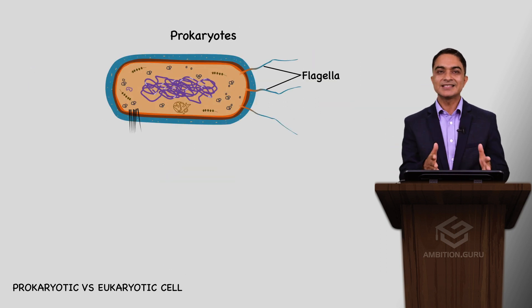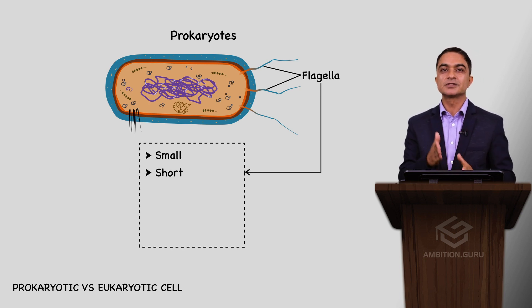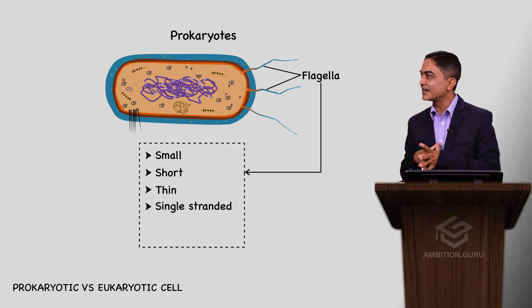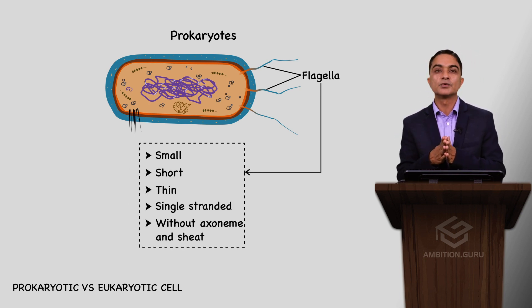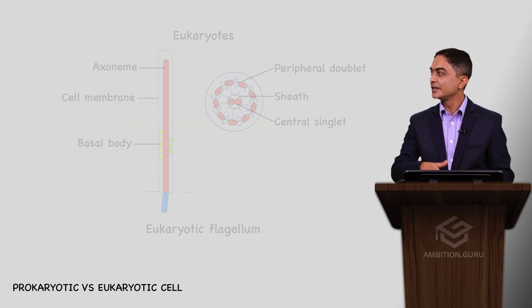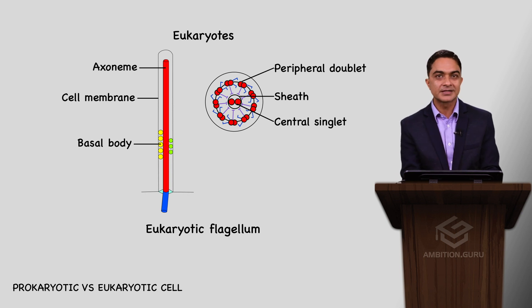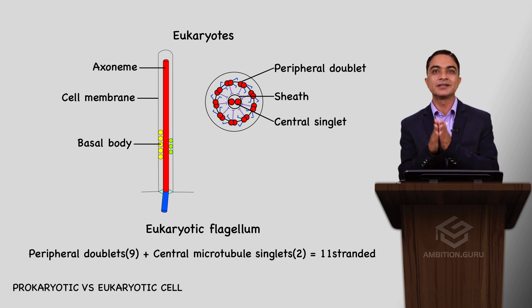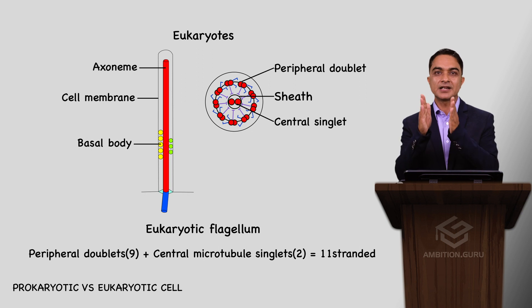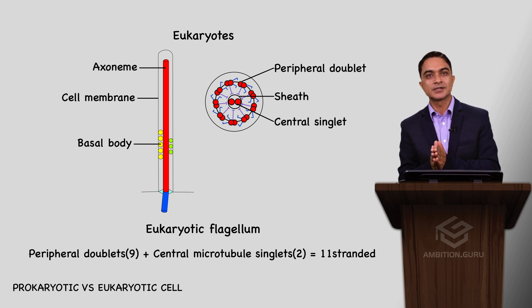Regarding flagella: in prokaryotes, flagella are thin and single-stranded, without an axoneme or sheath. In eukaryotes, flagella are present and are 11-stranded, with both an axoneme and sheath present.